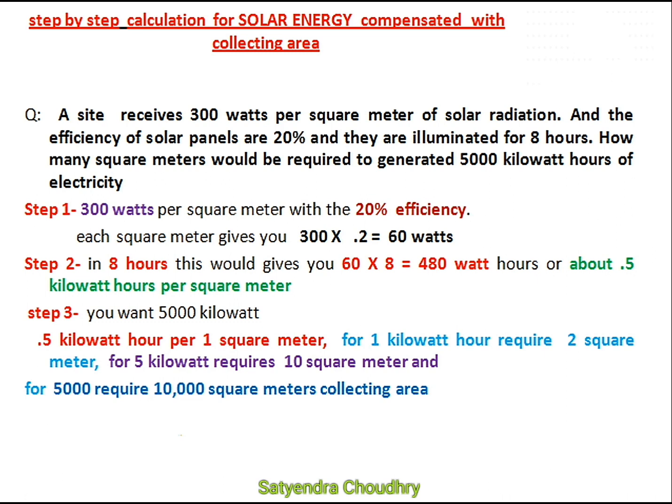Now we will calculate the total amount of energy generated in the given hours. The given duration is 8 hours, and in 8 hours it will be approximately 0.5 kilowatt hours per square meter.